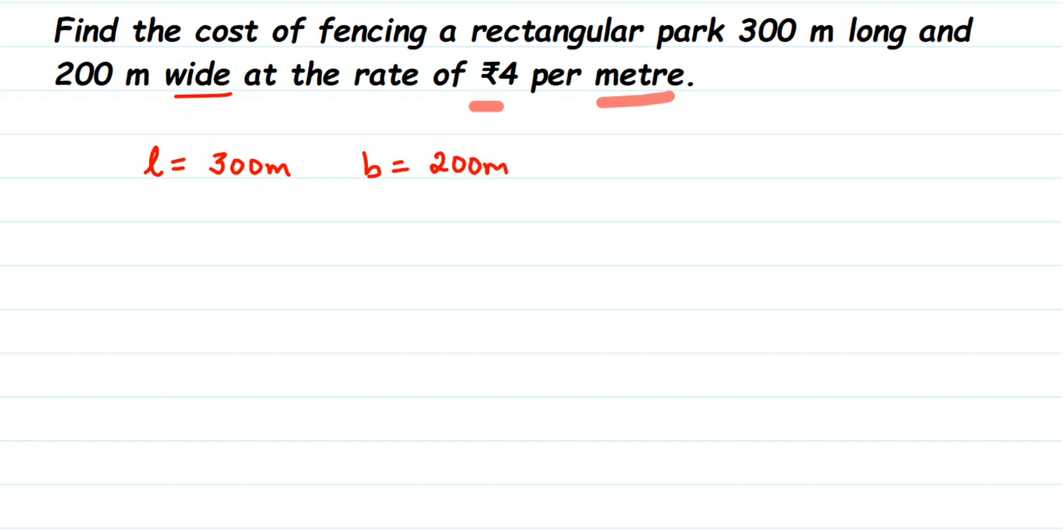So we're going to find out the perimeter of the rectangle. The perimeter of rectangle formula is 2 into l plus b. So perimeter of rectangular park is equal to 2 into l plus b. Some people use 2l plus 2b. Both formulas are the same, whichever is easier for you.